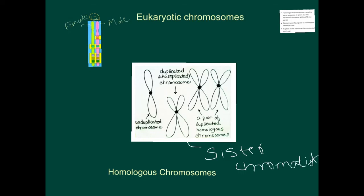These two are called sister chromatids. Similarly, these two are sister chromatids of each other, and these two are also sister chromatids of each other — that's what sister chromatids are.